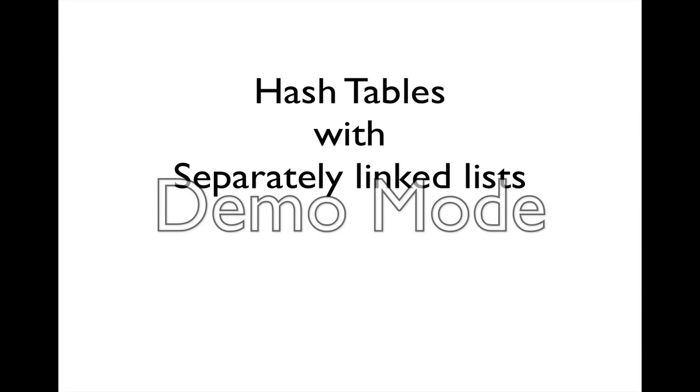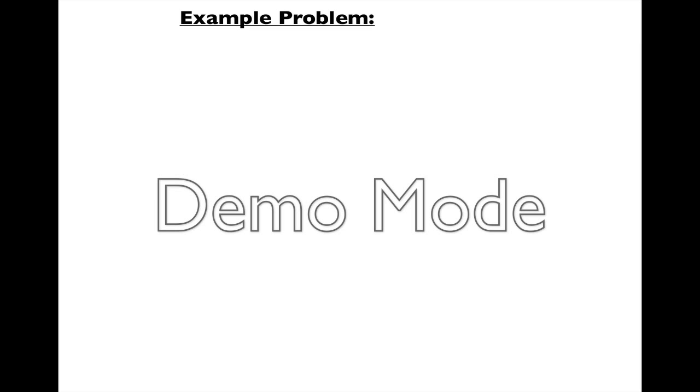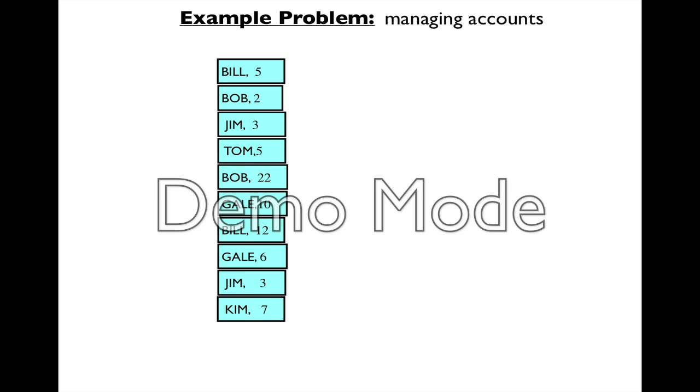This is a video about hash tables with separately linked lists. We're going to use as an example the problem of managing accounts in a bank. We have people coming in—Bill, Bob, Jim, and so on—and each one makes a deposit. The problem is that we don't know what are going to be the names of the people that open deposits, so we have to generate space for them in our data structure as they come.